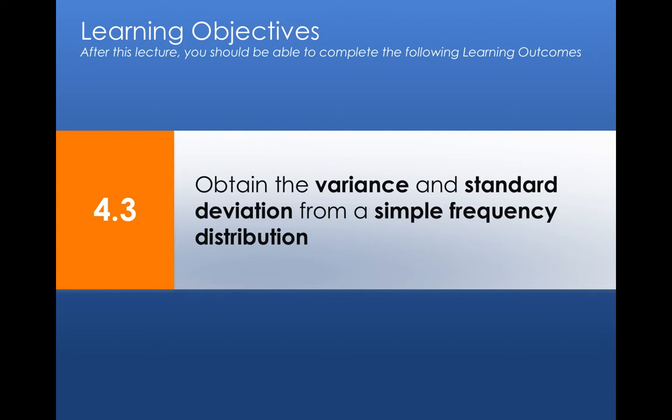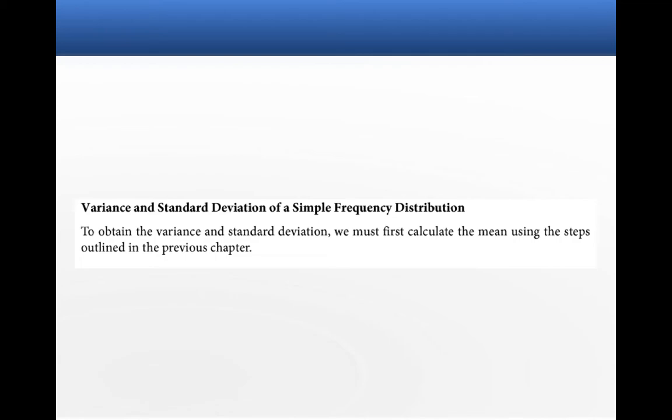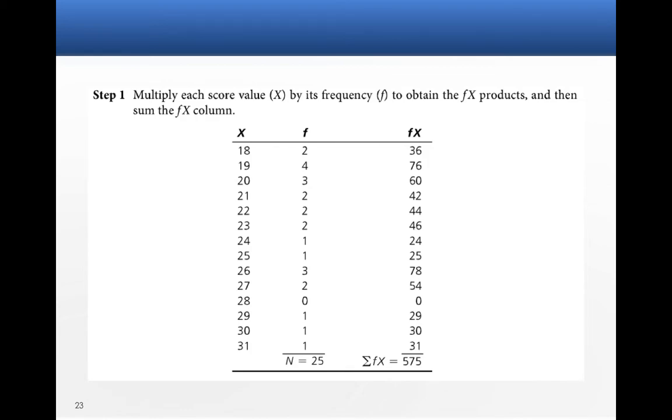What do we do when we have a simple frequency distribution? How do we get the variance and the standard deviation here? So again, we still have to get the mean. So here's our simple frequency variation. We have two scores of 18, four scores of 19, three scores of 20. Take a minute to look at it and make sure you understand where that comes from.